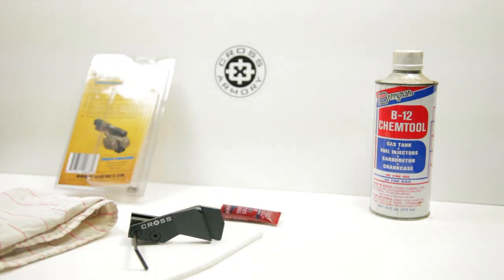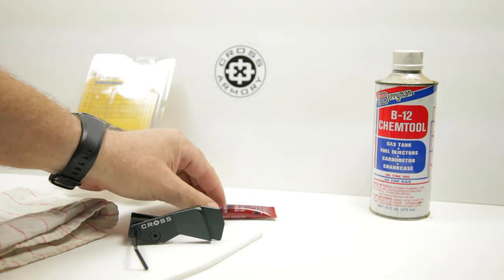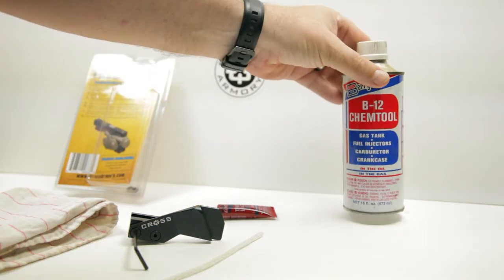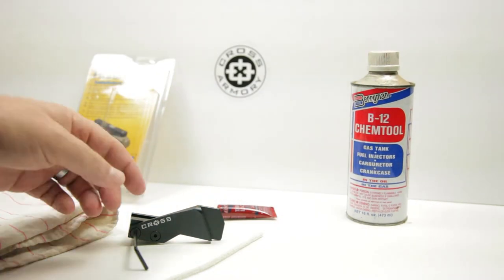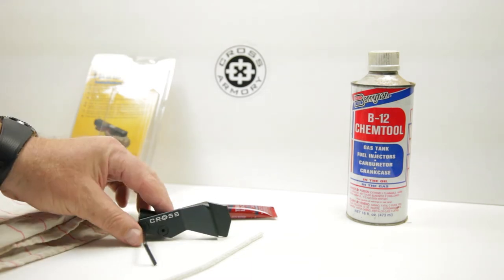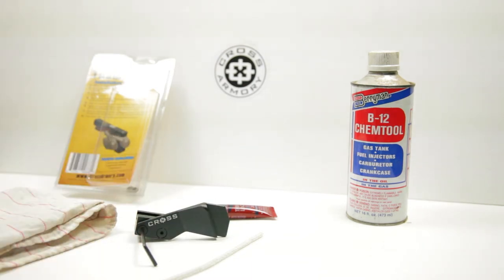The items used in the process are a pipe cleaner, a clean rag, thread locker, and a degreaser of some type. In this video I will use the cross armory thumb grip straight from the package to demonstrate the preparation of your components.